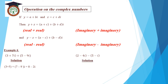(2 minus 4i) minus (5 minus i). Real: 2 minus 5 equals negative 3. Imaginary: negative 4i plus i equals negative 3i. Answer: negative 3 minus 3i.